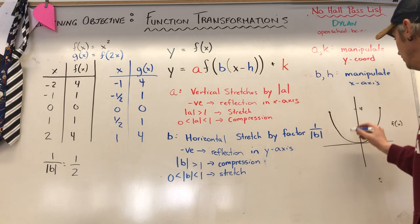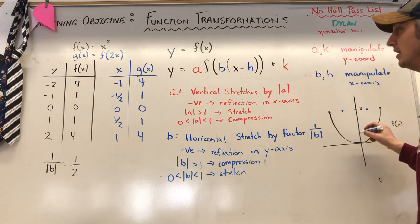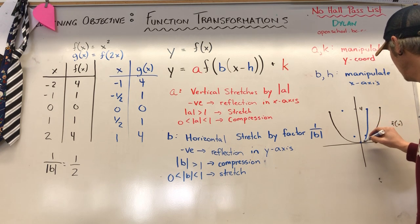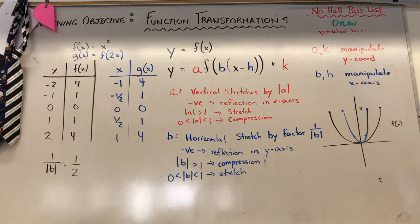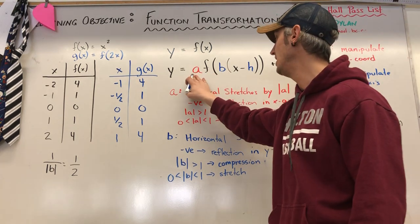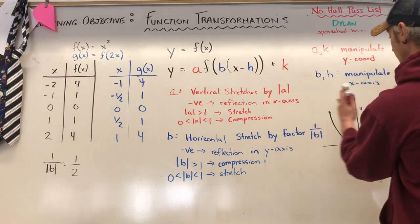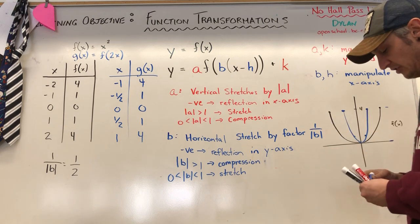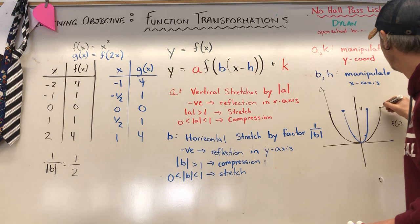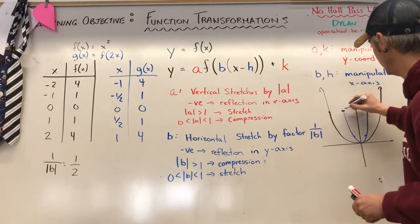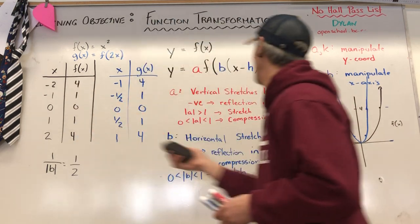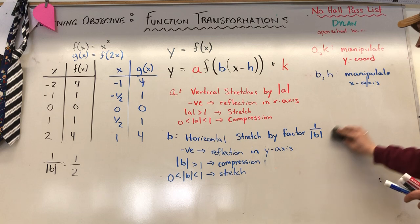My original function was 4 units wide from negative 2 to positive 2, so applying a stretch factor of one half means my x-axis should shrink by half — I should now be 2 wide, going from negative 1 to 1. My compressed function g(x) will be narrower. The vertical height has not changed because I haven't touched 'a' — there's no vertical stretching. The width reduction tells me I'm working with b.